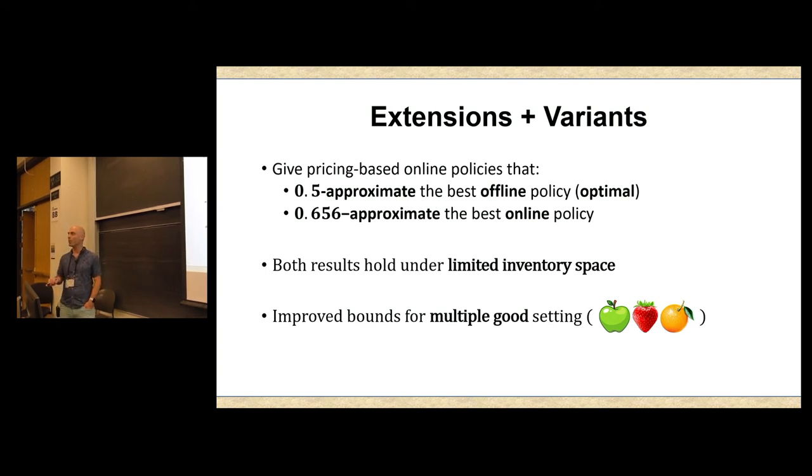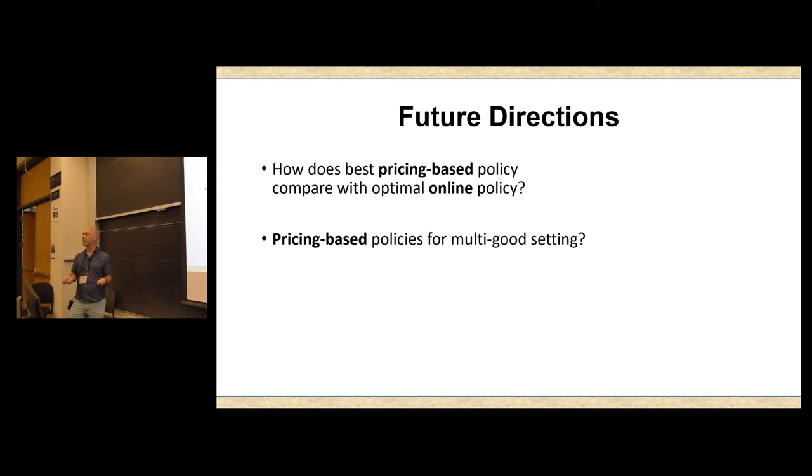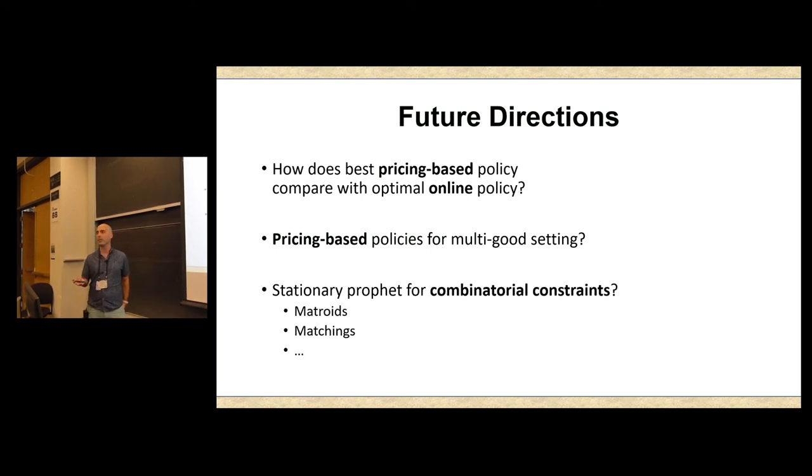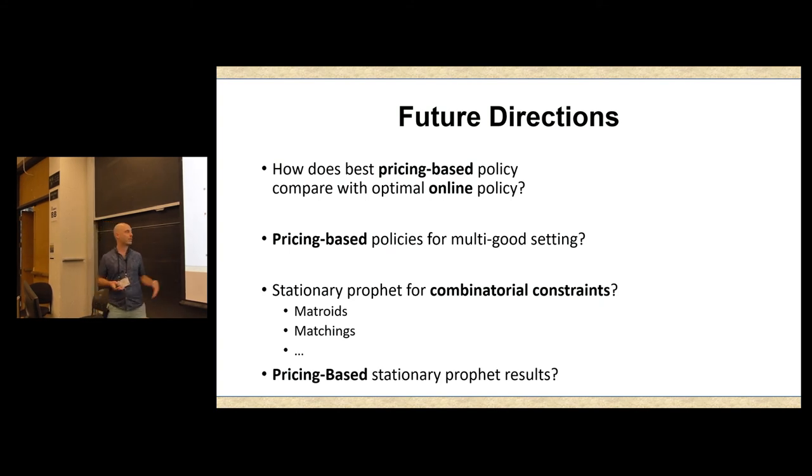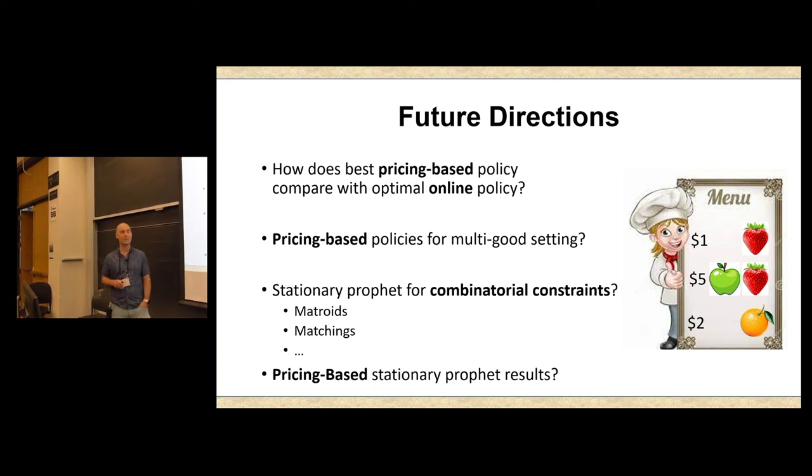Let me point out some natural open questions, which I think this work suggests. Generally, I mean, for this particular work, you can ask about how well we can approximate the best online policy using a pricing-based policy. But I think this is just true across the board. If you're into this queuing-theoretic stationary type of model, great. But generally, this is a question which is maybe not quite explored enough. Kind of competing with the optimal online policy, and in particular, based on prices. Next, for our particular problem, you could ask about pricing-based policies for the multi-good setting. And more generally, you could ask about stationary prophet problems for any kinds of combinatorial constraints. Buyers show up, I want you to sell me something, maybe not just a single item, maybe some independent set in a matroid, maybe a matching. And here again, you could ask about pricing-based results in this setting. And I think this would probably tie in nicely to some audience members' work on menu complexity. So I think there's definitely some interesting connections to be drawn there.